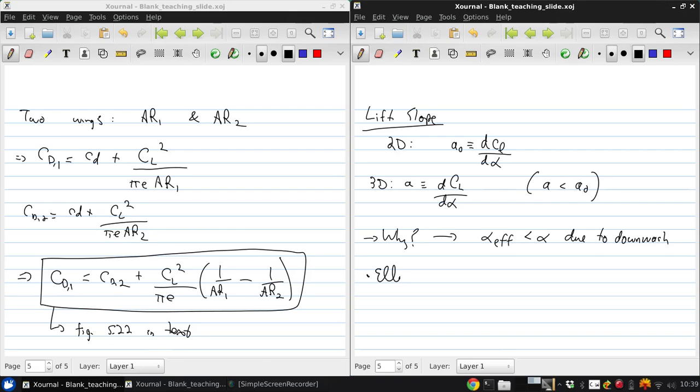If we have an elliptic wing, so that the induced angle of attack and the effective angle of attack are constant along the span, and it's the same airfoil section so that Cl, little Cl, is the same everywhere, then for that elliptic wing the overall lift coefficient is just CL equals Cl.